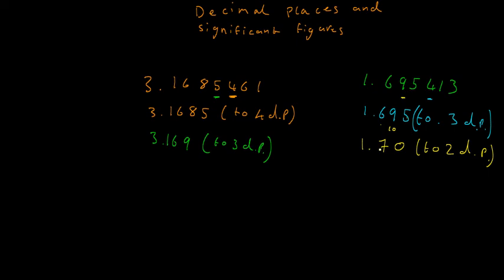Okay, now we can look at significant figures. That was all decimal places. Significant figures is slightly different, but the principle of rounding is the same. So say we were given the number 56940 and we're asked for the answer to 2 significant figures.